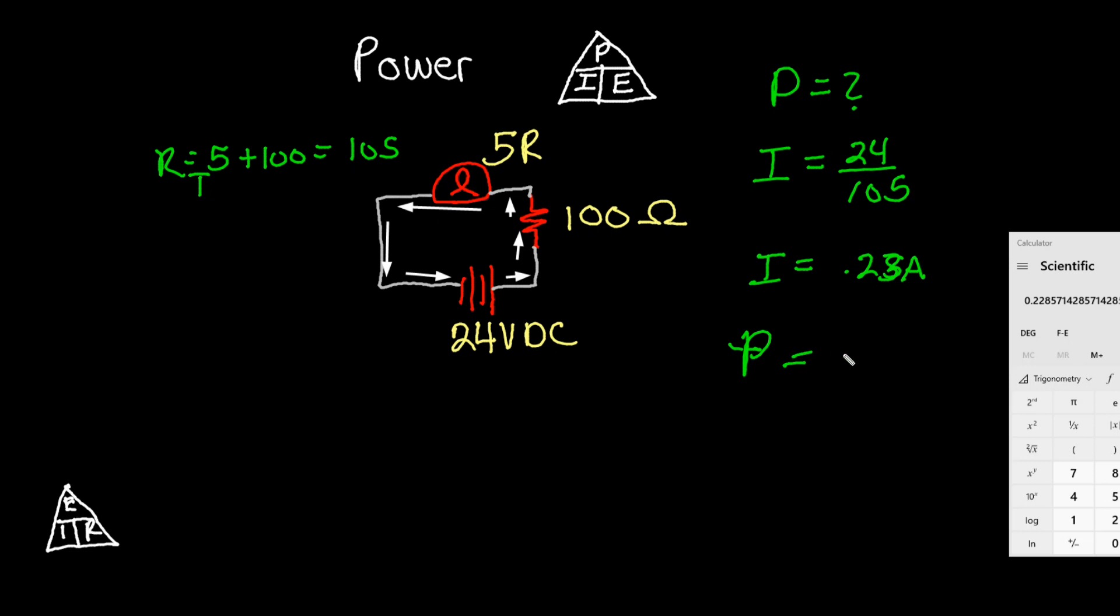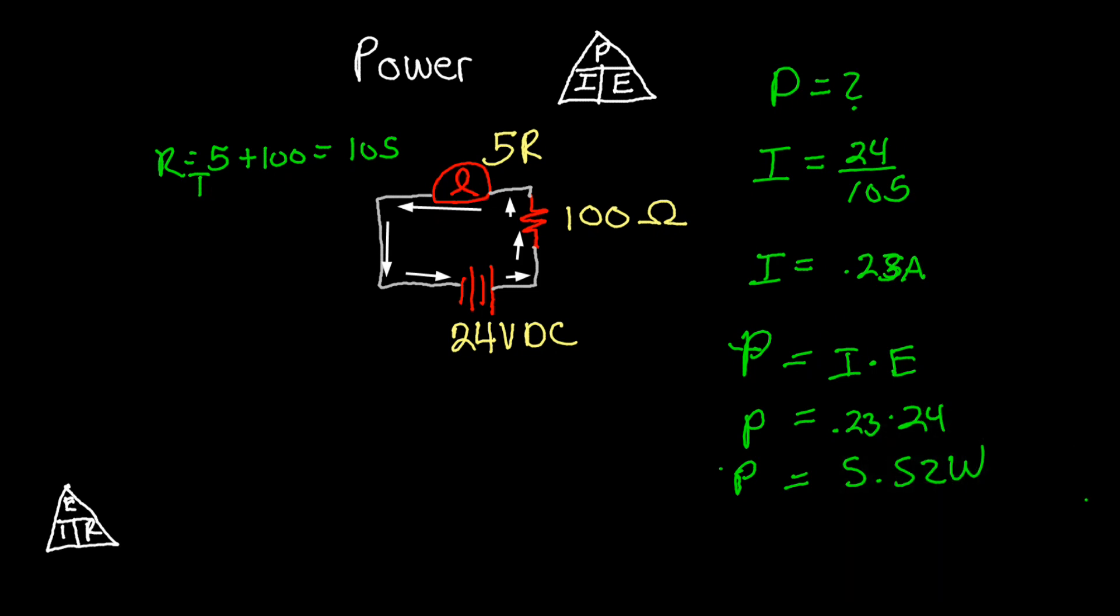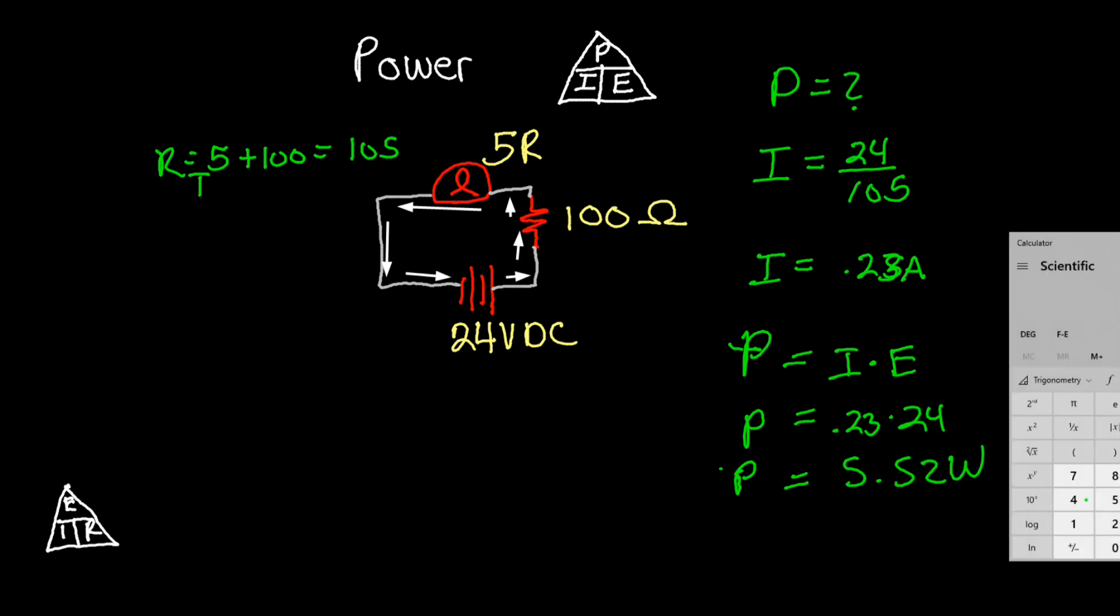We say P is equal to I times E. P is equal to 0.23 times 24. And P is equal to 5.52 watts.